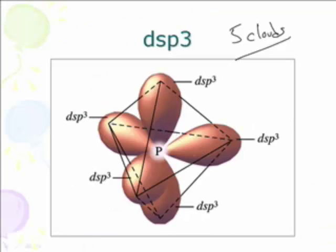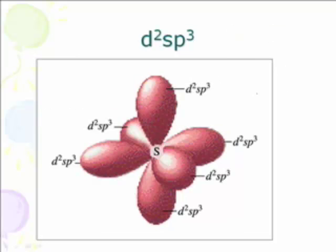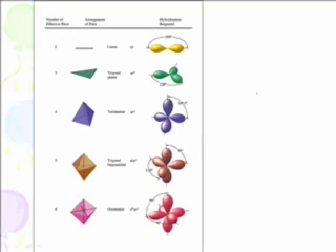So if you've got five clouds, it is called DSP3, and the DSP3, you take the sides of a trigonal bipyramidal shape. And if you get D2SP3, this is that octahedral shape, and that's how that works. And this picture kind of illustrates the rest of it.